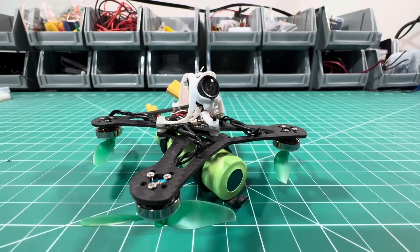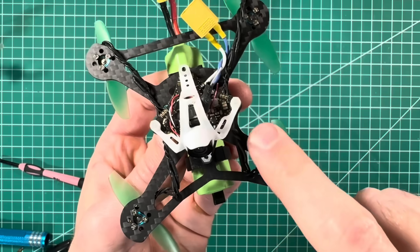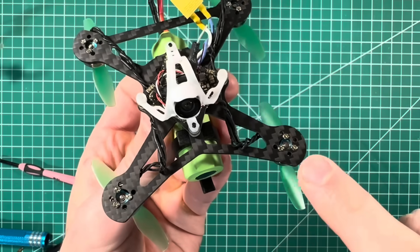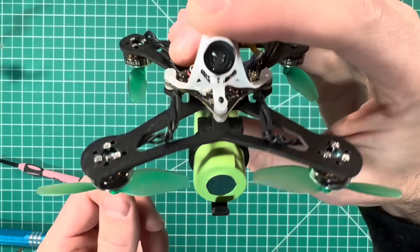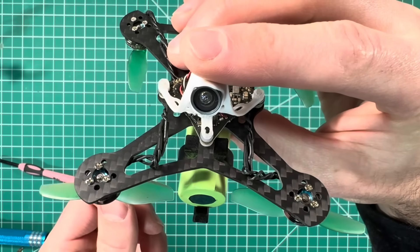The motors face downwards because it more efficiently pulls air past the arms rather than pushing it against the arms. My testing showed it was about 10% more efficient to do it this way. There's just enough clearance for the battery.